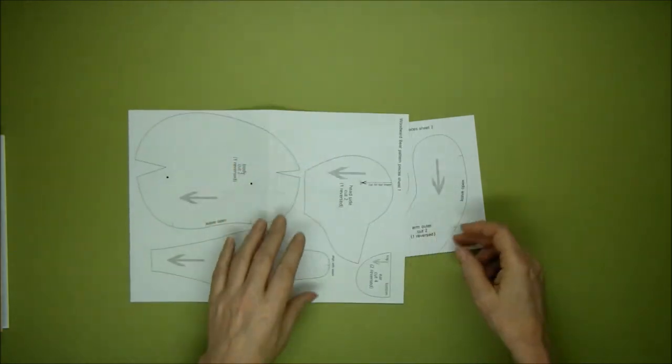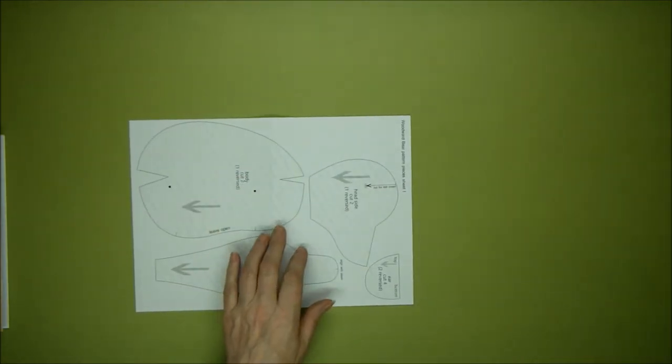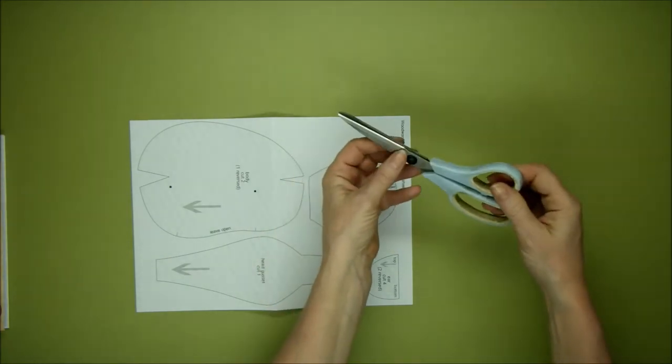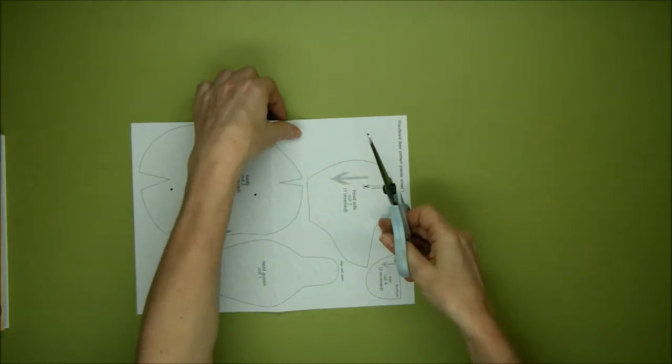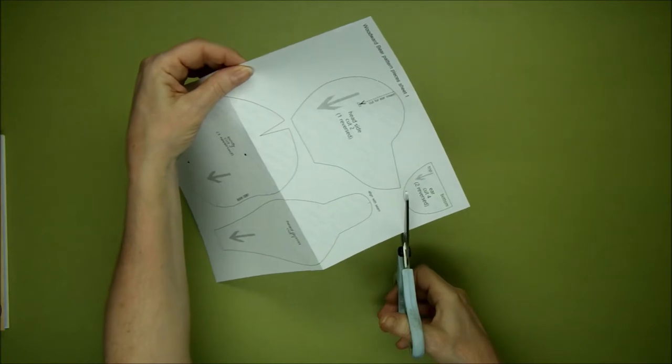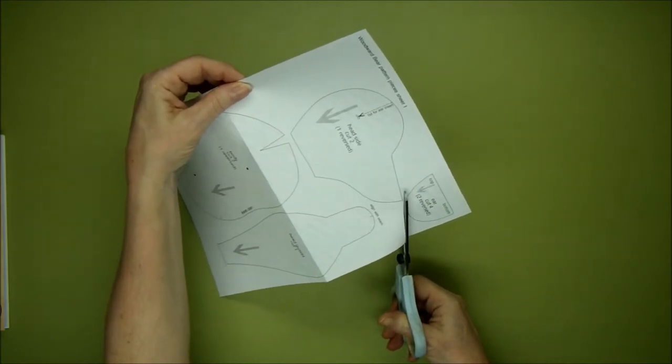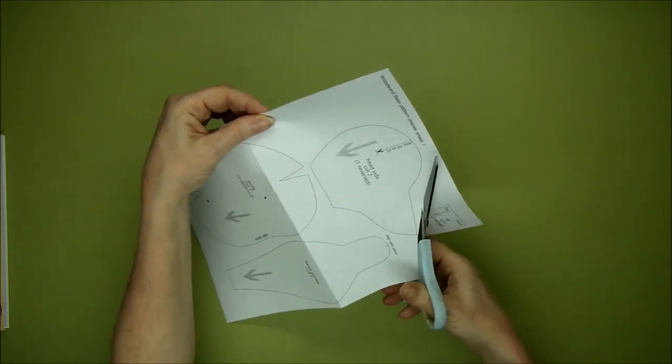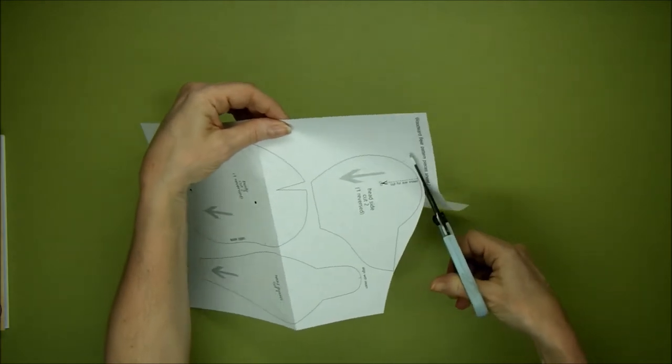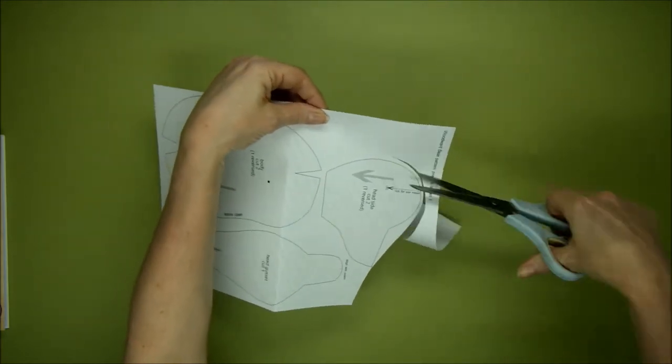It really does ruin the blades using them on paper. Cut around, not on the line, but around the outside of the pattern piece leaving a gap, leaving a space around the entire pattern.